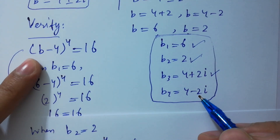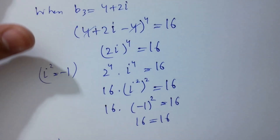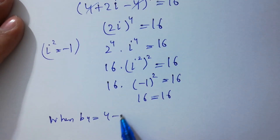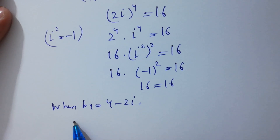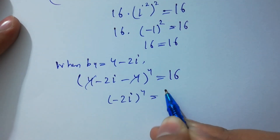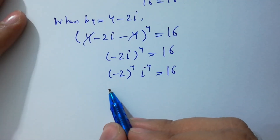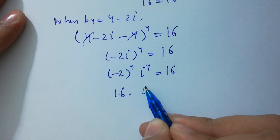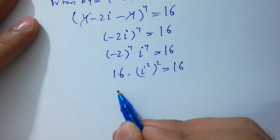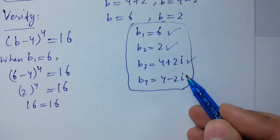For b = 4-2i: substituting, we get (4-2i-4)⁴ = (-2i)⁴ = (-2)⁴ · i⁴ = 16 · i⁴. Again i⁴ = (i²)² = (-1)² = 1, so we get 16 = 16. This confirms that b = 4-2i also satisfies the equation.